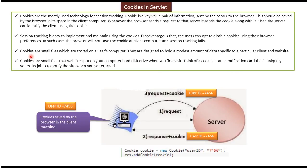Here is one definition of cookies: cookies are small files which are stored on a user's computer. They are designed to hold a modest amount of data specific to a particular client and website. Another definition: cookies are small files that a website puts on your computer hard disk drive when you first visit. Think of a cookie as an identification card that is uniquely yours — its job is to notify the site when you have returned.